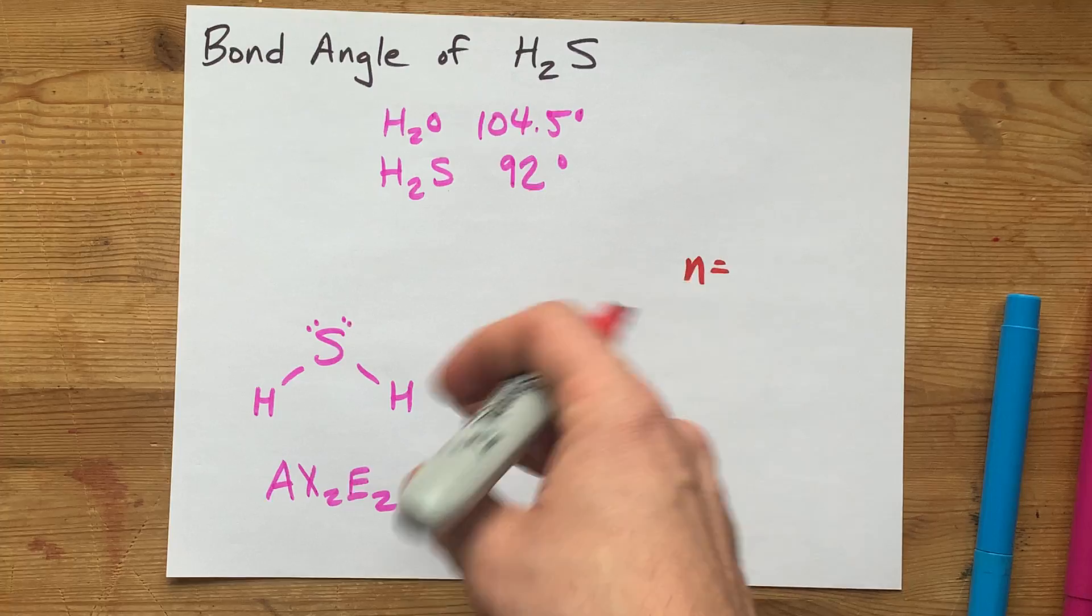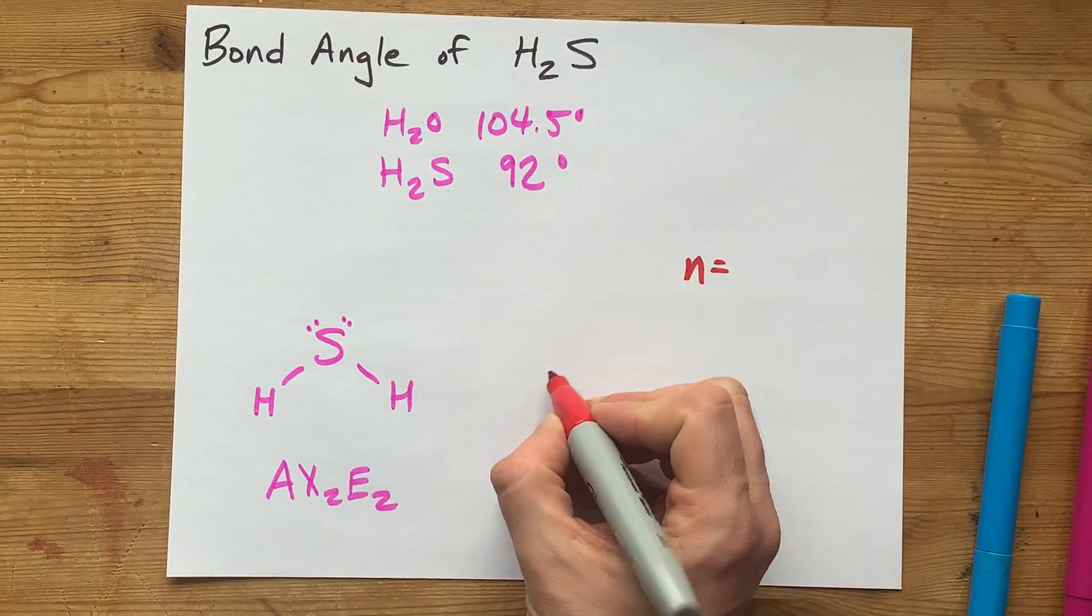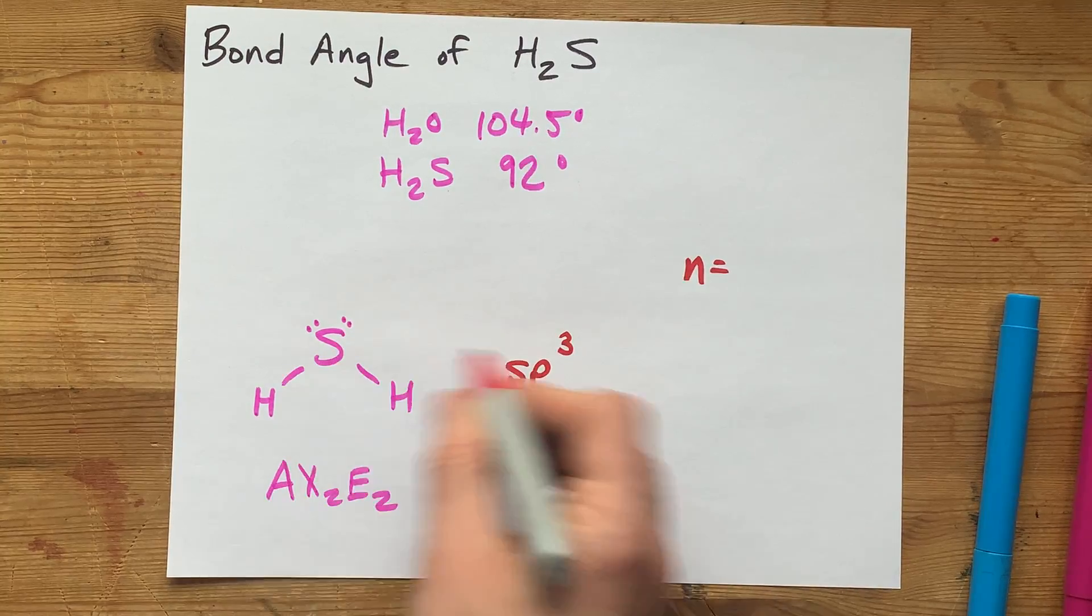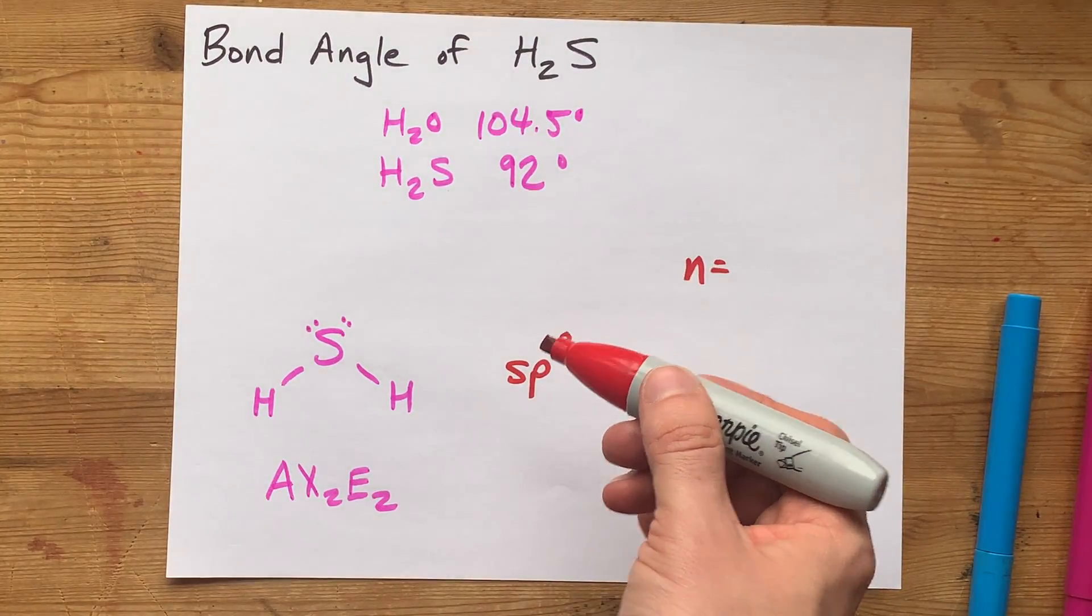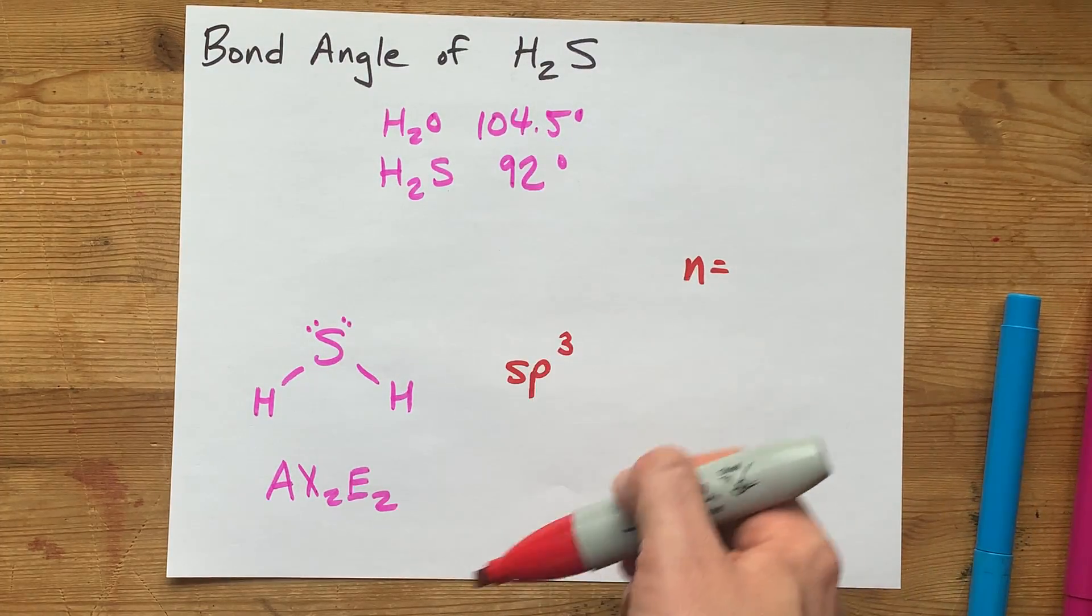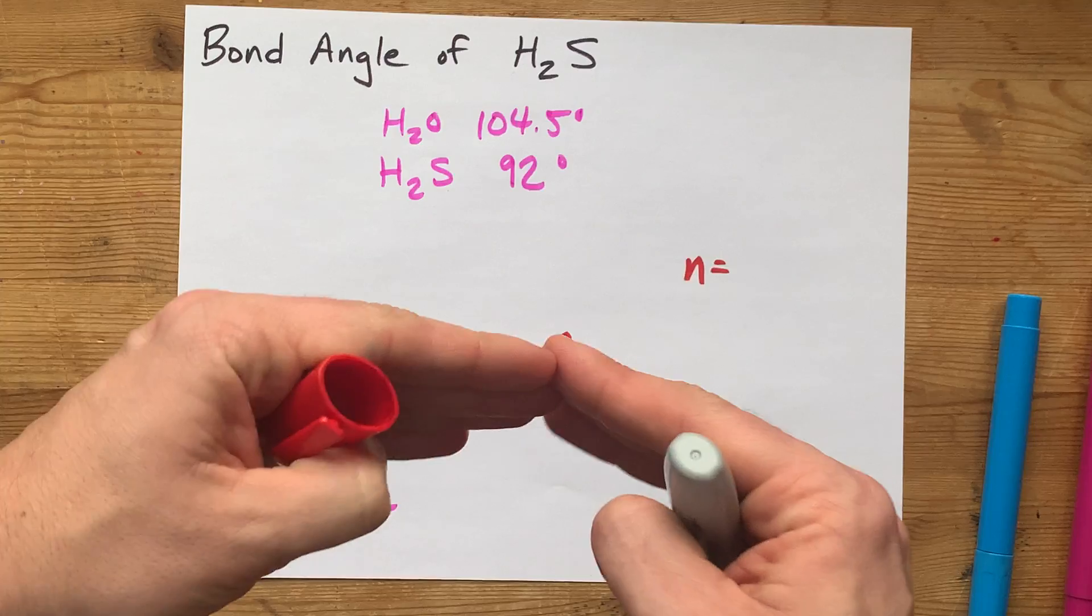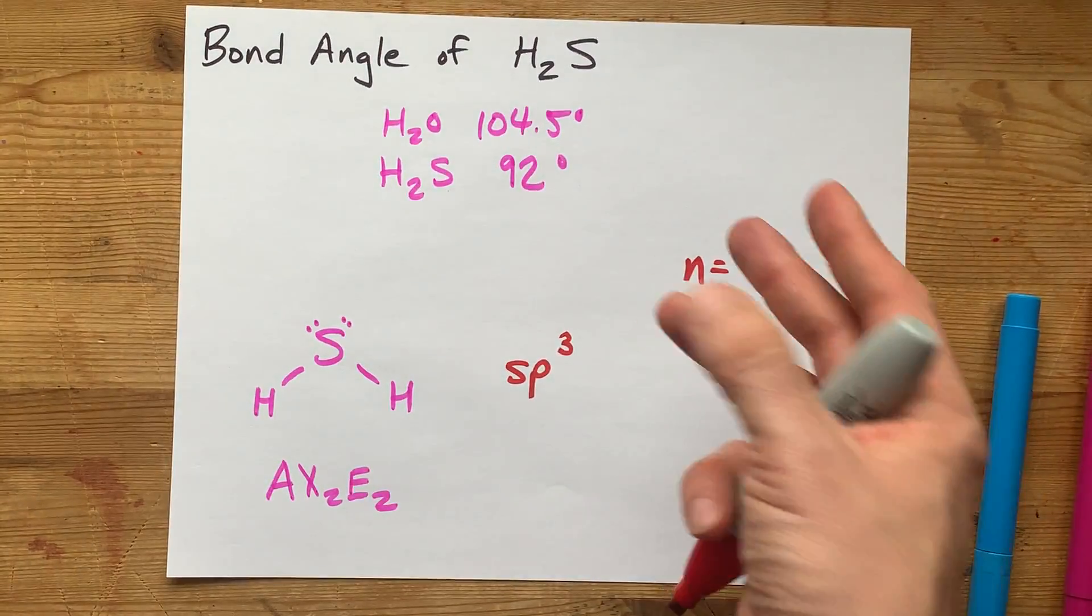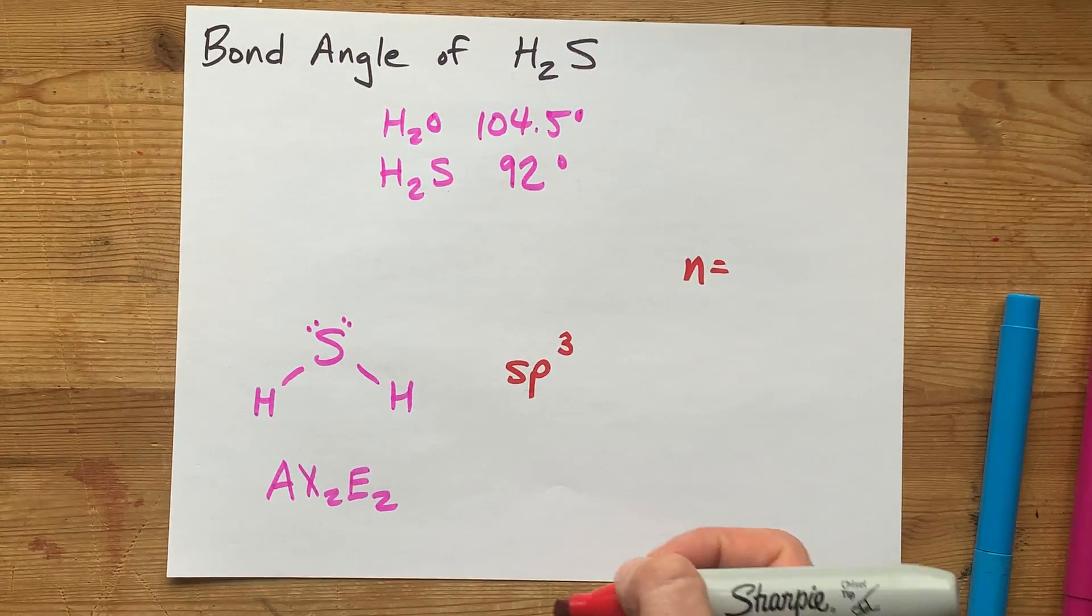That means the hybridization or turning this into SP3 hybridized sulfur, it has more P character than S character because of the larger energy difference between the 3S and the 3P orbitals that you're hybridizing together to make these hybrid orbitals.